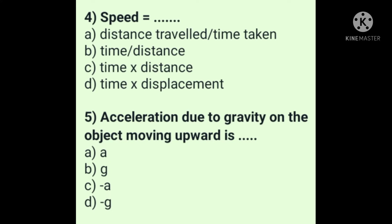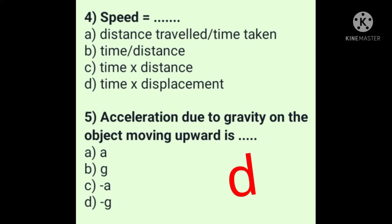Question 4: Speed is equal to dash dash. Answer is option A: distance travelled upon time taken. Question 5: Acceleration due to gravity on an object moving upward is dash dash. Answer is option D: minus g.